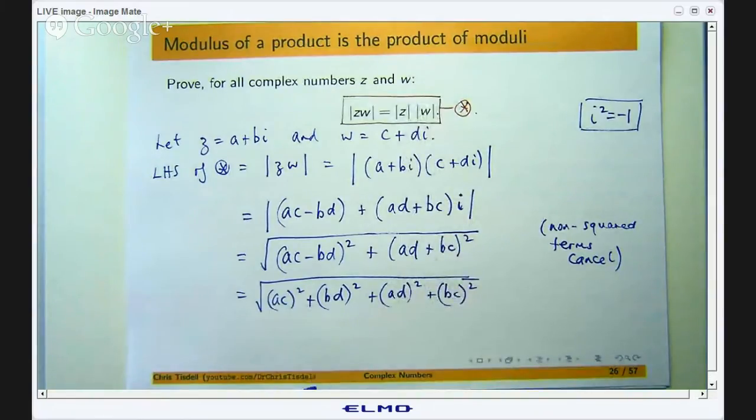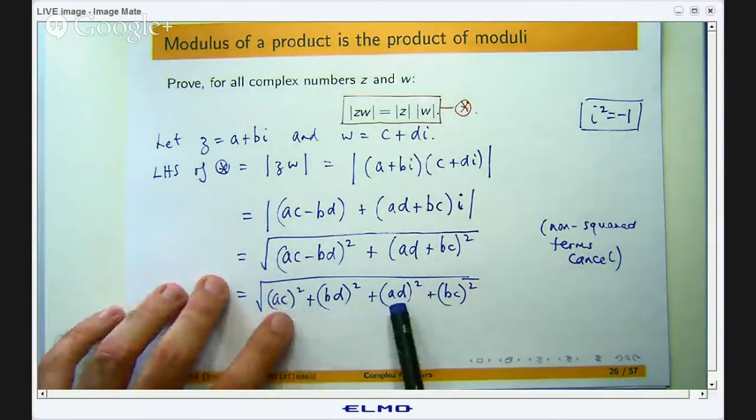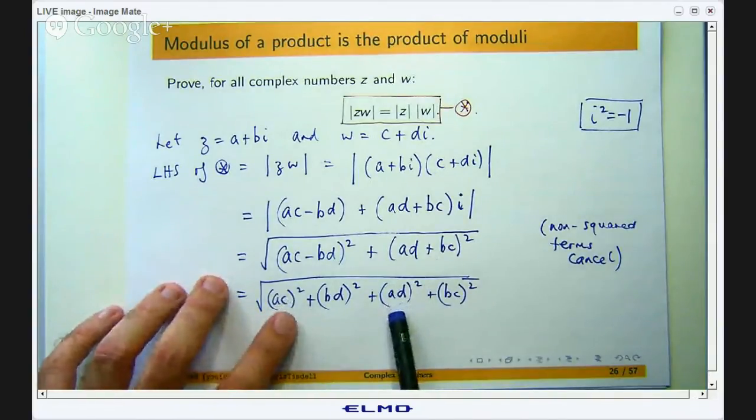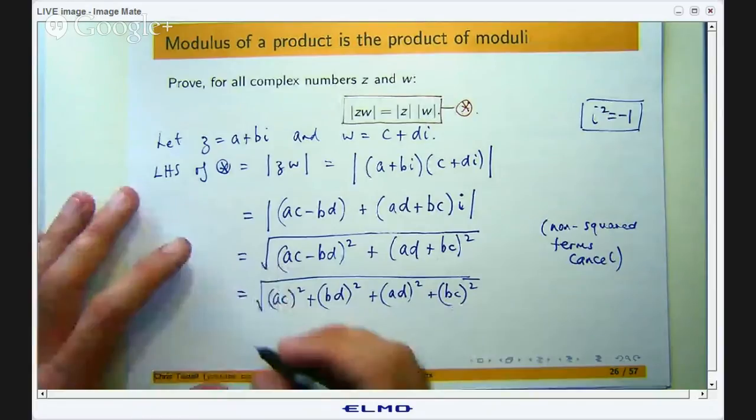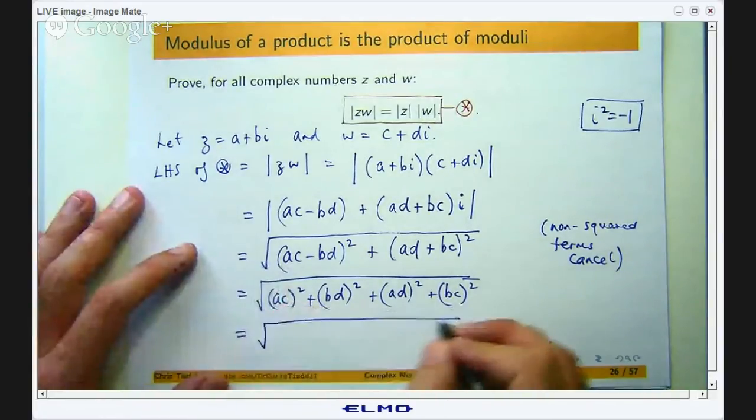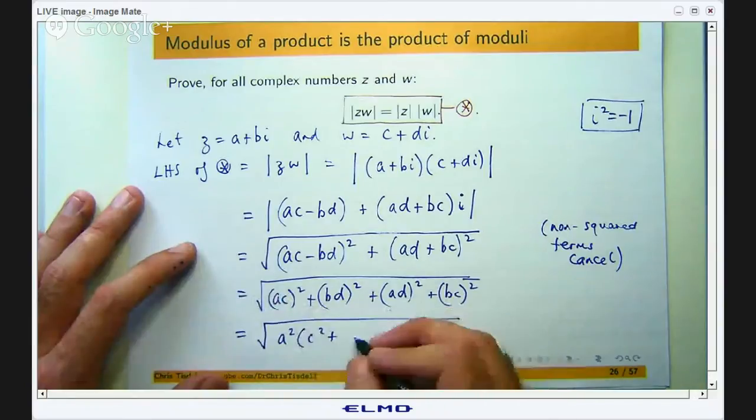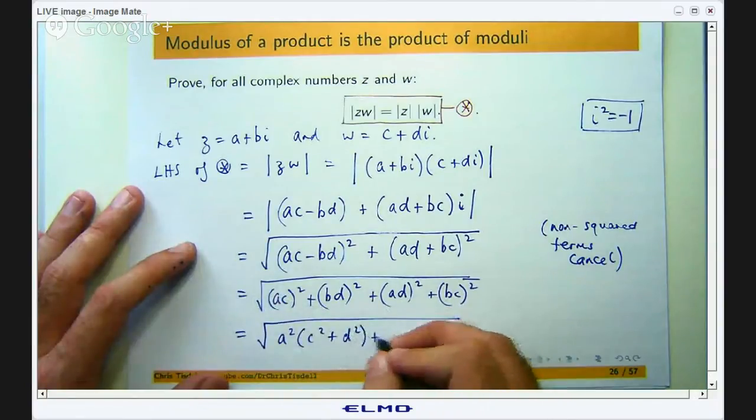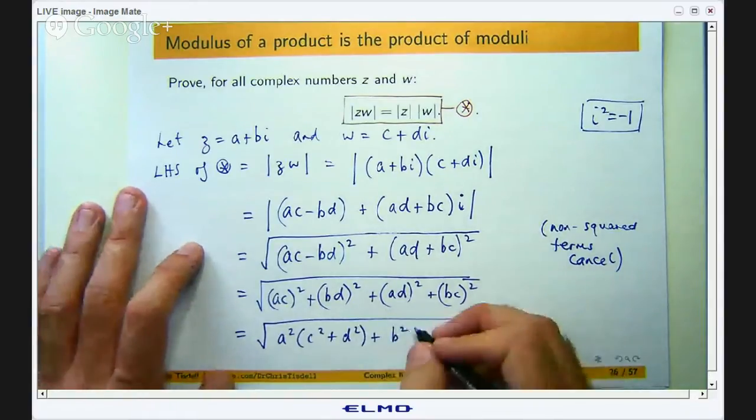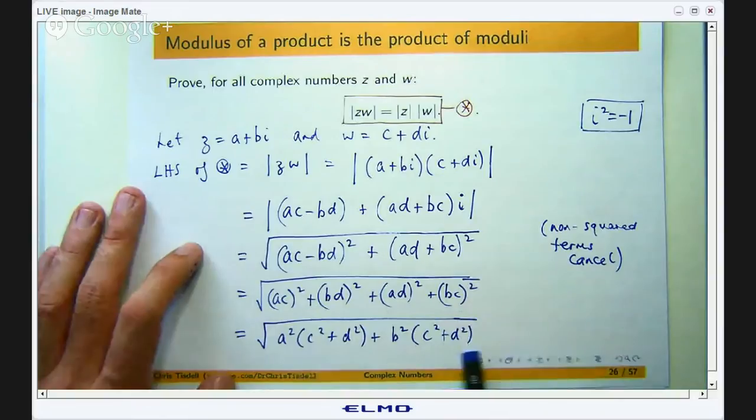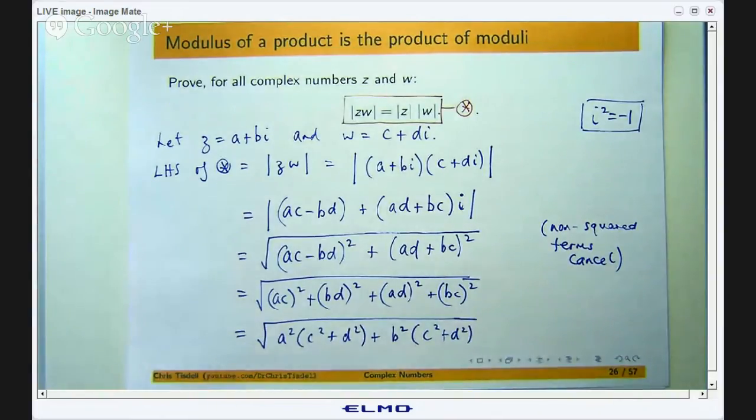Okay, well if you look, say if I take a common factor of a squared out of these two terms and say a b squared out of these two terms, then I will get the following.